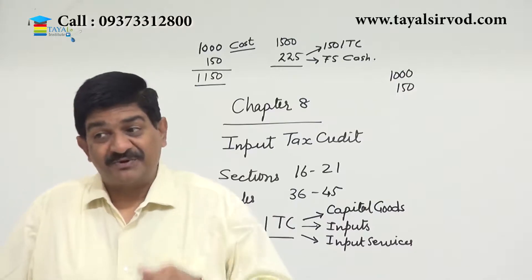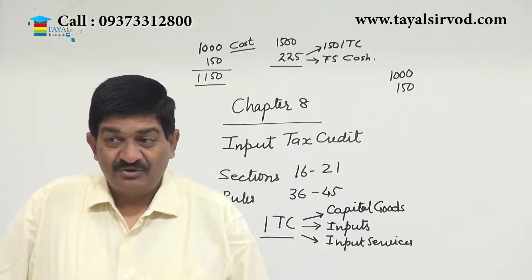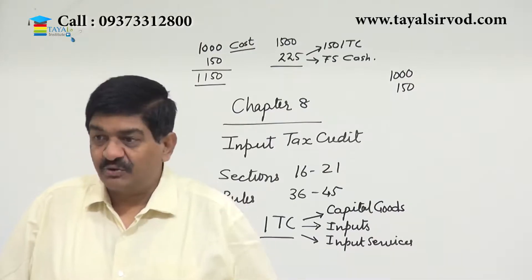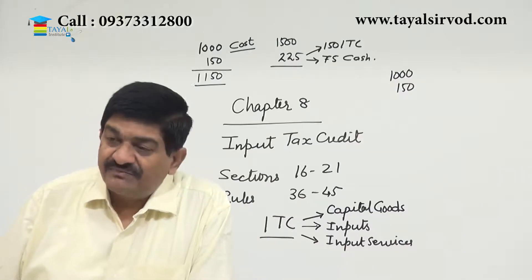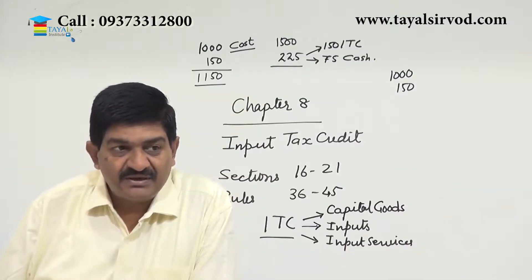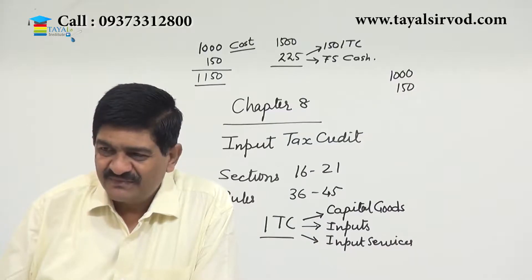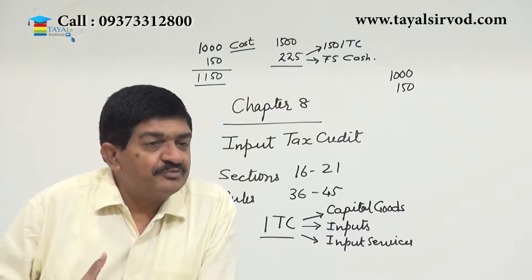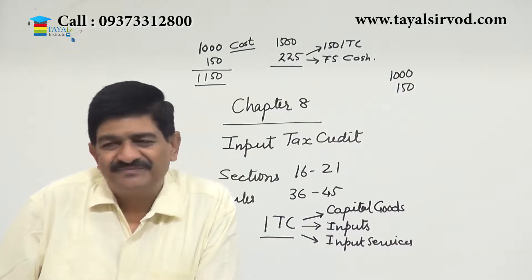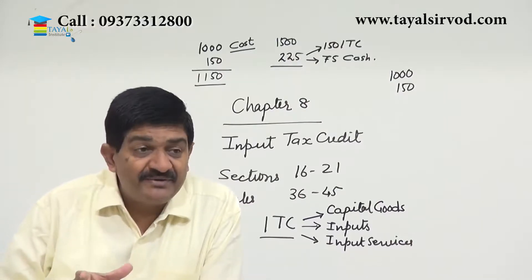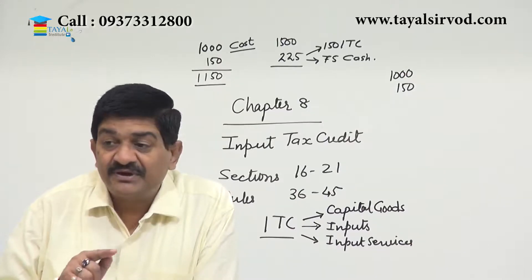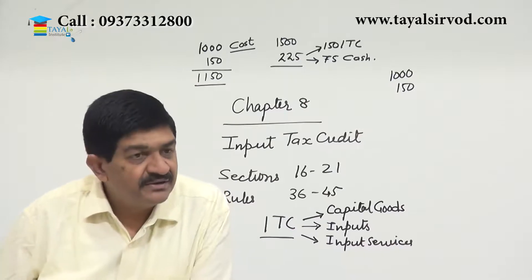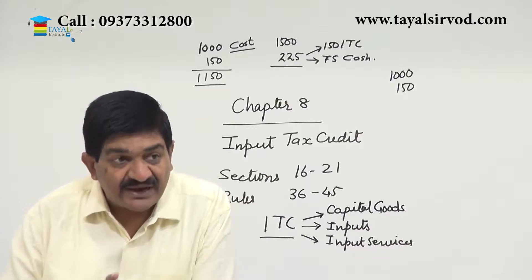What will happen if goods are procured from an unregistered person? The reverse charge mechanism becomes applicable. For the time being, the government has said hold on, but the provision is already there. If the value of supplies from an unregistered supplier in a day exceeds 5000 rupees, then tax becomes payable. The credit is available for whatever is paid under RCM — if I receive a supply on which I have to pay tax under RCM, I will pay it and then avail the credit of that amount. So credit will not be available when the supply is received from a person in the composition scheme.